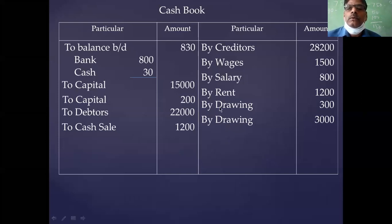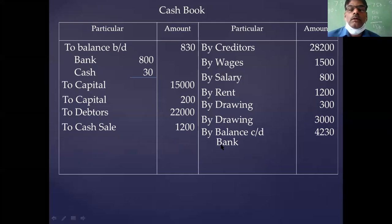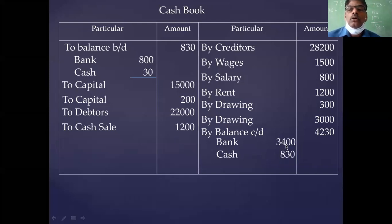There are two drawings. Then write the closing balance — take the closing balance from the asset and liability balances given in the problem. By balance carried down: bank is 3,400; cash is 830; total is 4,230. This is the cash book. Whatever was given in the problem is only a statement — a receipt and payment statement, not a cash book.